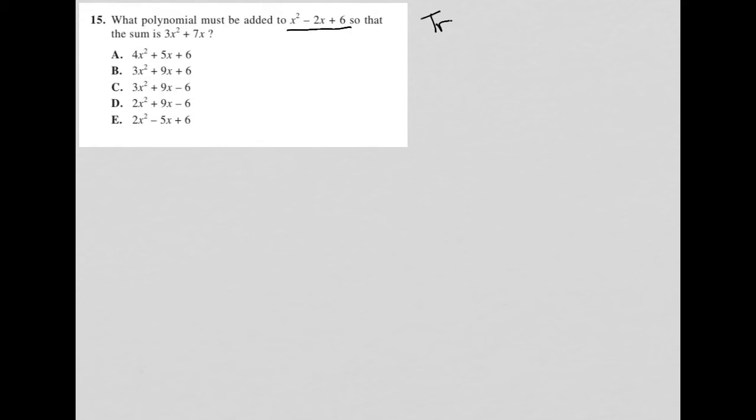So if I were to translate this, it's a bit short for a typical translation question, but it does require some translation. What I basically just read is that x squared minus 2x plus 6 plus something, which is where the answer choices come in,